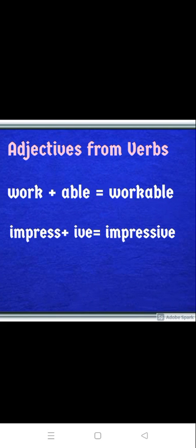We can form adjectives from verbs. When we add ABLE to the verb WORK, it becomes WORKABLE. When we add IVE to IMPRESS, it becomes IMPRESSIVE.